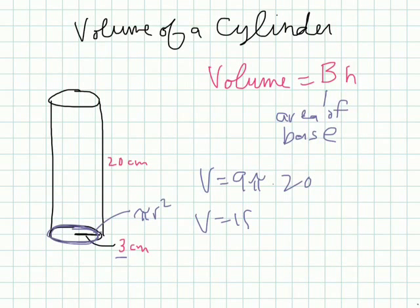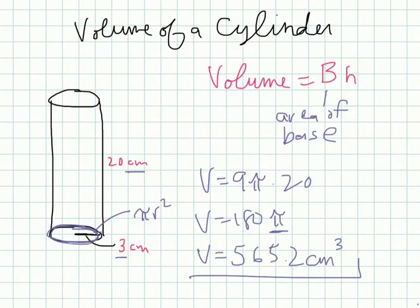The volume would equal 180 pi. And a rough multiplication of pi being 3.14 would give us 565.2. And what is our unit? Centimeters cubed, because we're talking about volume. So again, you just found the area of the base, and you multiply that by the height. And there's the volume.